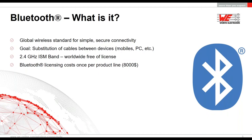So what is Bluetooth? Bluetooth itself is a wireless standard for simple and secure connectivity. It was invented to replace cables, for example between PCs and peripherals such as printers, or between other mobile devices. It uses the 2.4 GHz ISM band, which can be used worldwide free of license. Bluetooth itself does carry licensing costs, but this has to be paid only once per product line — about eight thousand dollars for a normal producer of devices.